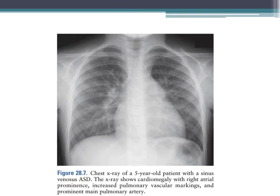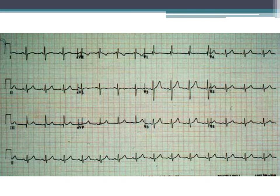On chest x-ray for ASD, you can see a prominent right atrial appendage, increased pulmonary vascular markings, and a prominent main pulmonary artery. The EKG in ASDs can show an RSR prime pattern in V1. Whenever you see this pattern in V1, be on the lookout for ASDs, though it is more commonly found in normal children.